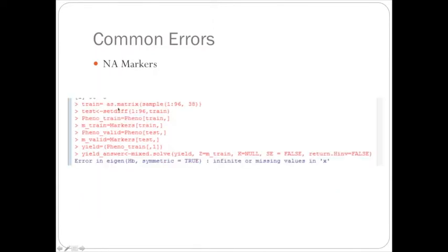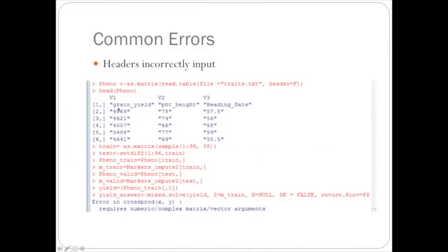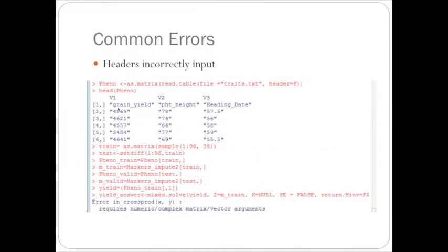The headers then go into the first line of the phenotype matrix. And once I run mix.solve, it says that it requires a numeric matrix. So these headers were put in as non-numeric and as characters. So the marker matrix cannot multiply and mix.solve.